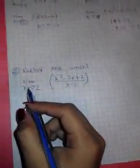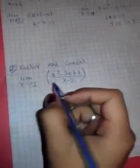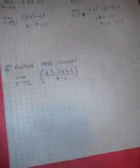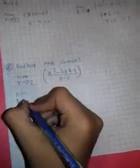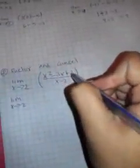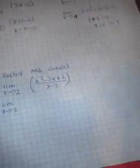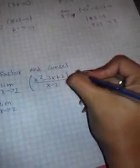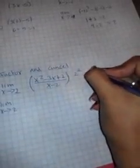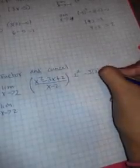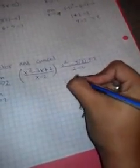The next method is factor and cancel. Here we have the limit as x approaches 2 of the equation x squared minus 3x plus 2 over x minus 2. We always use direct substitution first just to make sure — that gives us 2 squared minus 3 times 2 plus 2 over 2 minus 2.